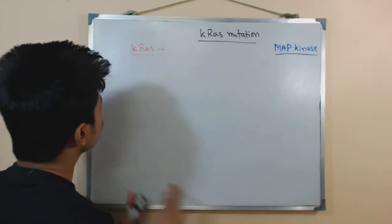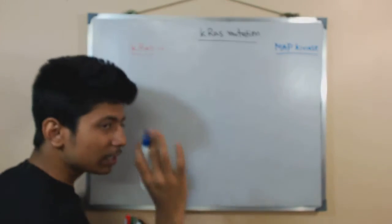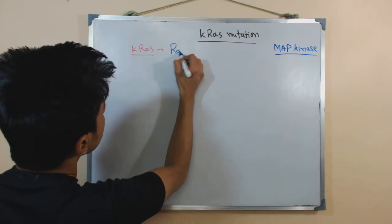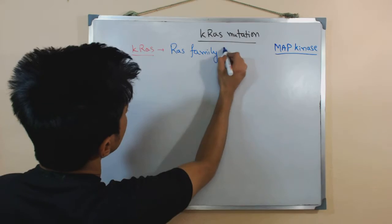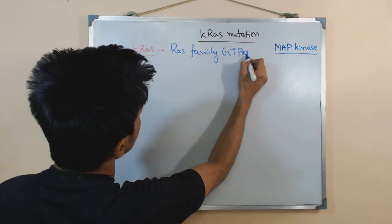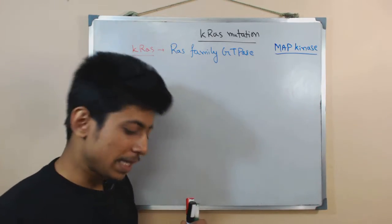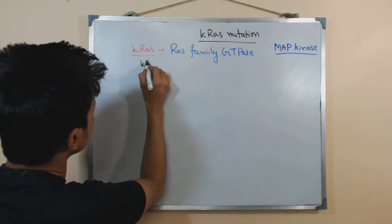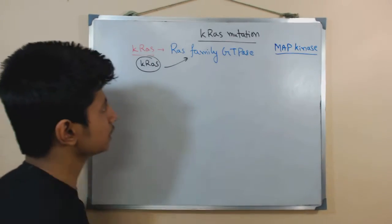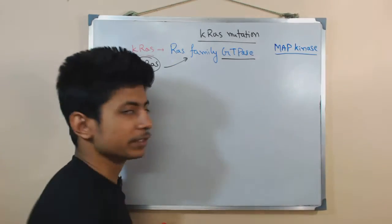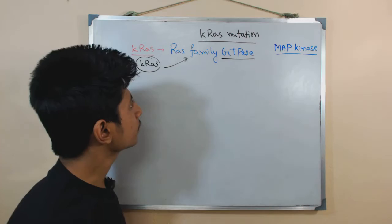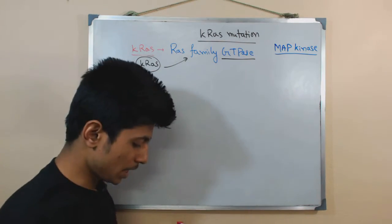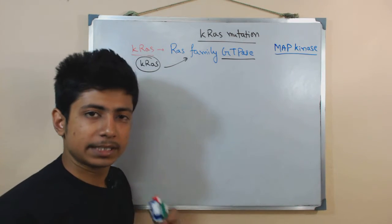KRAS is a gene, and the function of the protein it produces is GTPase activity, so it is called the RAS family GTPase. That means the gene produces a protein called KRAS protein, and that protein's function is GTPase activity.